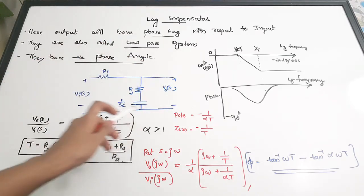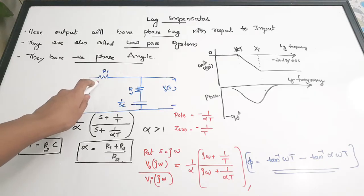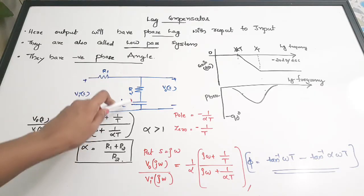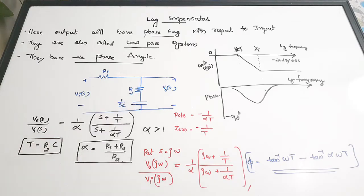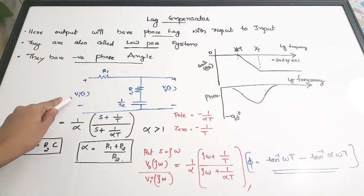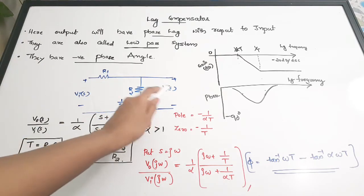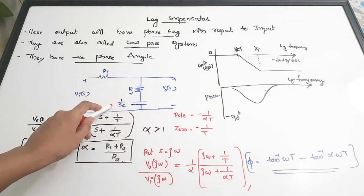So these are the three important points you should remember about a lag compensator: the output is a phase-lagged version of the input, the lag compensator resembles a low pass system, and they have a negative phase angle. Now if you draw the circuit of the lag compensator, it will have a resistance R1 and a combination of R2 and a capacitor C. In the Laplace domain, input is Vi(s) and output is Vo(s).